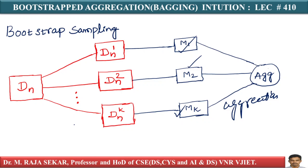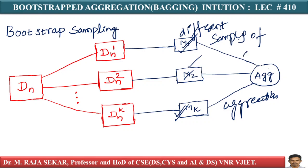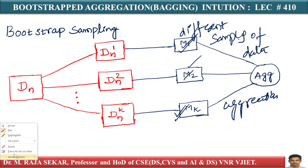Each of these models — model one, model two, through model k — are seeing different samples of data. None of them see the whole data; they are seeing only a part, a random sample of the data.